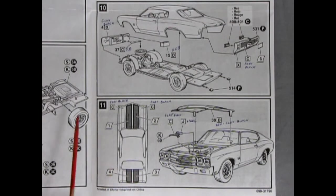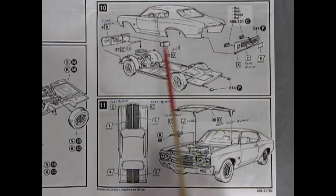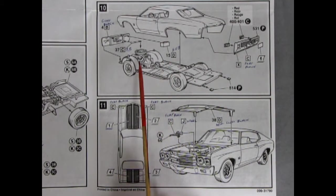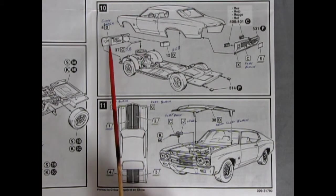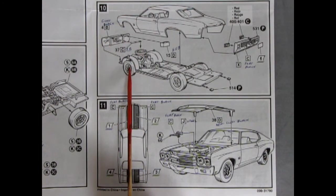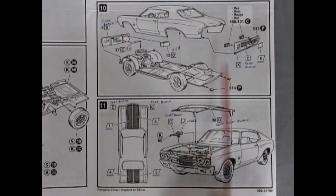Now sections 10 and 11 show the completion of our body. So here it'll click onto our chassis. And then you put in your radiator wall here. With the upper radiator hose. And your battery onto the rad support.